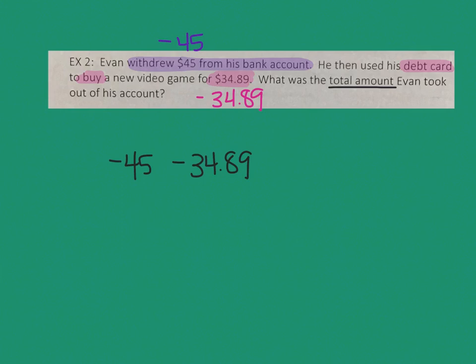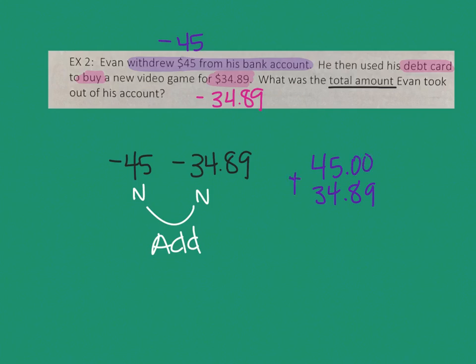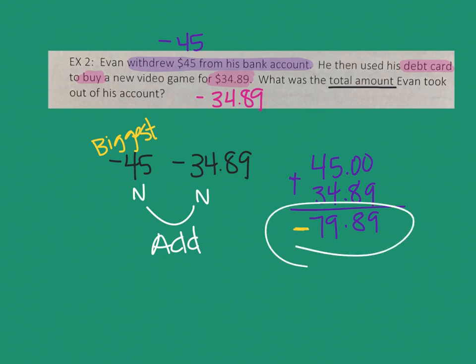Both of these numbers are negative. If they're the same, you really should add. Remember that decimals need to be lined up. So I have 45 and then 34.89. Since 45 didn't have a decimal, I'm going to add one and fill in the blank spaces with zeros, so I still have 89 cents. Then 45 plus 34 is 79. The biggest number was negative, and that tells you the sign of the answer. So the final answer is negative $79.89 — that's how much he spent.